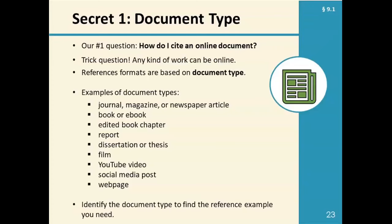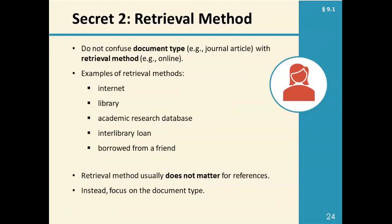The second thing I want to talk about is retrieval method. It's important not to confuse document type with retrieval method. Some examples of retrieval method are on the internet, at the library, from an academic research database, from interlibrary loan, or you borrowed a book from a friend. Retrieval method usually doesn't matter for references. Instead, you want to focus on the document type — just because you got it online doesn't matter very much for the reference.